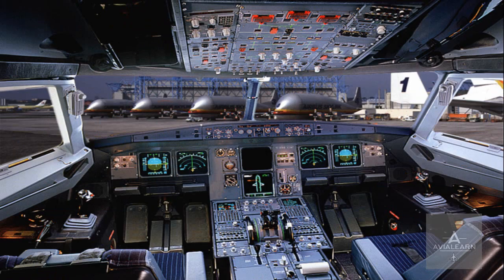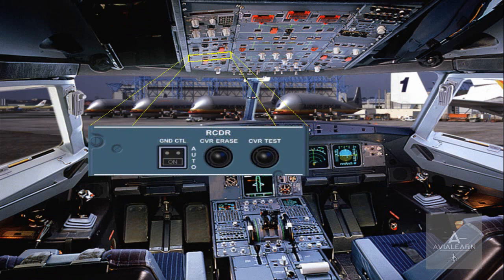The operation of the DFDR is automatic. On the overhead panel, there is a ground control push-button switch located on the recorder panel. This switch enables the pilot to manually select the DFDR and the cockpit voice recorder, CVR, ON when the aircraft is on the ground. CVR will be studied in the communications chapter.